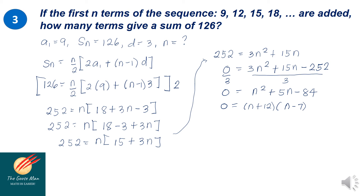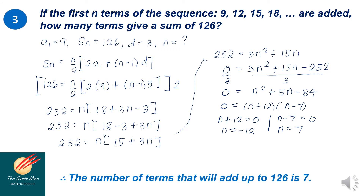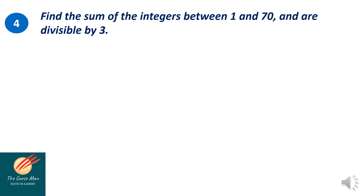By the zero property of equality, n plus 12 equals 0 gives n equals negative 12, and n minus 7 equals 0 gives n equals 7. Since the domain of the sequence is the set of positive integers, we reject negative 12 and accept n equals 7. Therefore, the number of terms that will add up to 126 is 7.